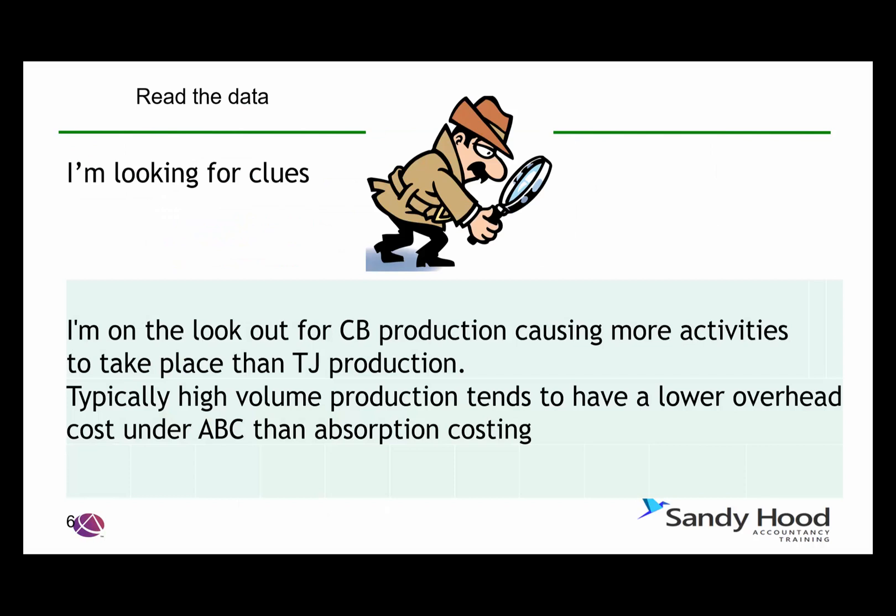So I'm on the lookout for clues — specifically for the CB production causing more activities to take place than TJ. The reason for that is because we know that the CB activity-based costing overhead is higher than the TJ one. And typically, high volume production tends to have lower overhead costs under ABC than absorption costing.